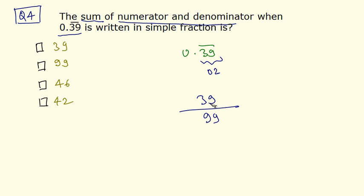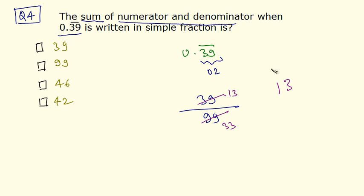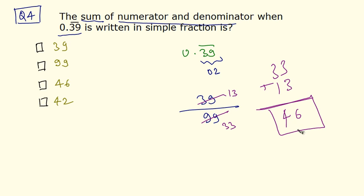Now we have to reduce this fraction to lowest terms. We can divide both numerator and denominator by 3. So 39 ÷ 3 = 13, and 99 ÷ 3 = 33. That gives us 13 by 33. So 13 plus 33 is the sum of numerator and denominator: 3 + 3 = 6 and 3 + 1 = 4, giving 46. Option C is the correct answer.